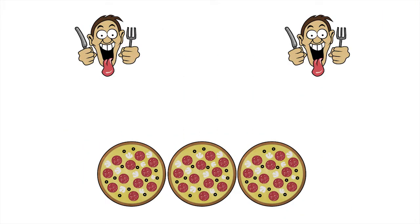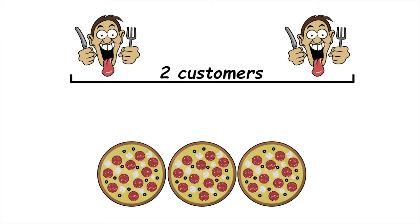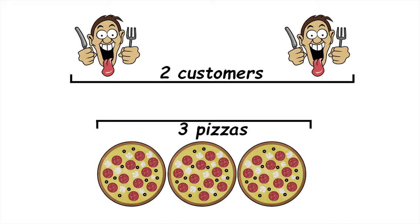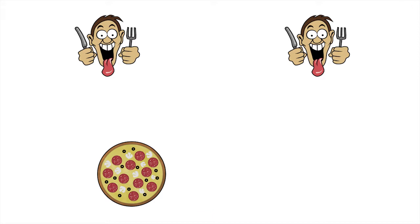Let's see if we can help Peppy. There are two customers and three pizzas. We want to divide the pizzas up into equal sized slices and share them out so each customer gets the same amount of pizza. Let's deal with one pizza at a time.